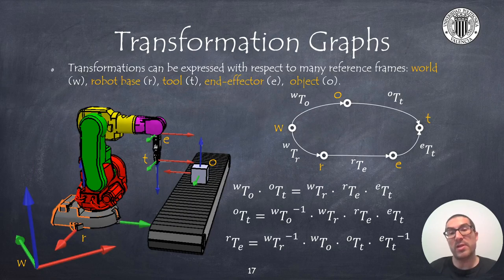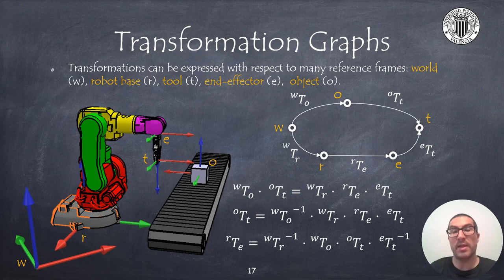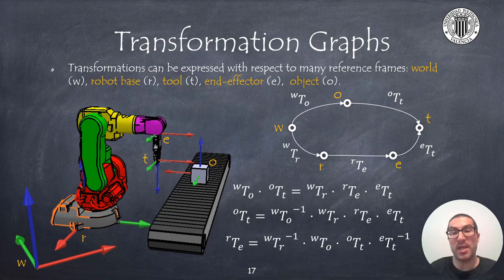This relation between reference frames allows us to construct transformation graphs, in which we can find the transformation with respect to any reference frame that typically appears in a robotic system. For example, there is a transformation WTR between the wall frame and the robot frame. Likewise, we can get a transformation between the robot frame and the end effector frame, noted as RTE, and between the end effector and the tool frames, the ETT transformation. We can also know the transformation of an object with respect to the world and the transformation of the tool to the object, the OTT transformation — useful for finding how far or close the tool is with respect to the object.